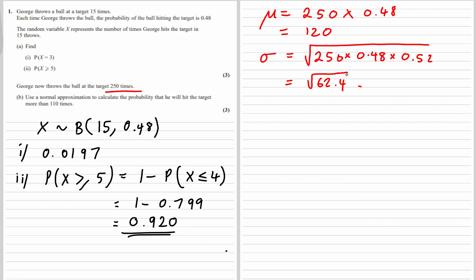We've got our mean and our standard deviation. We want to know the probability that he hits the target more than 110 times. The number of times he hits it can only go up by one each time — 110, 111, 112 — there's nothing in between. But when we're using a normal distribution, it's got to be continuous. So we're going to say 110 goes from 109.5 to 110.5, and we're looking for the probability that it's bigger than 110.5.